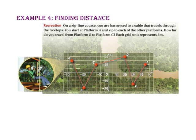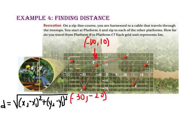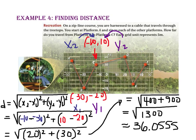Example 4 says: on a zipline course, you are harnessed to a cable that travels through the treetops. You start at platform A and zip to each of the other platforms. How far do you travel from platform B to platform C? Each grid unit represents 5 meters. Identify the coordinates of points B and C, write the distance formula, identify x₁, y₁ and x₂, y₂, substitute and simplify. After simplifying, we get approximately 36 grid units. Multiplying by 5 meters per unit gives approximately 180 meters.